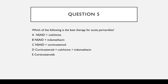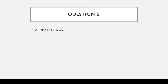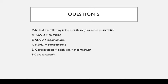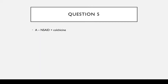Question 5: Which of the following is the best therapy for acute pericarditis? The correct answer is A — NSAIDs and colchicine, as mentioned in the pericarditis slide. Corticosteroids are not first line.